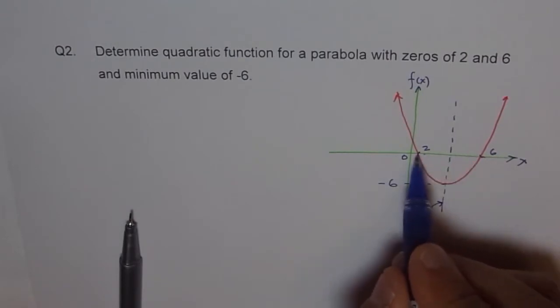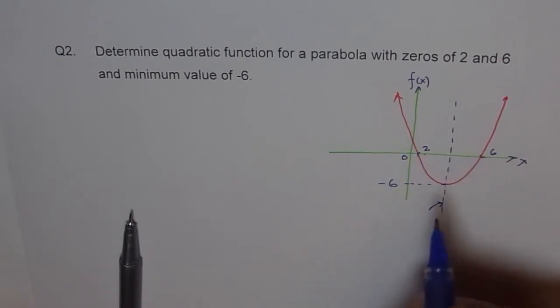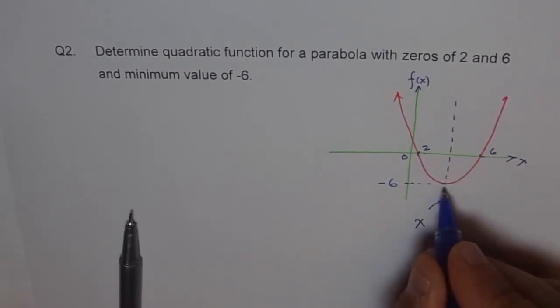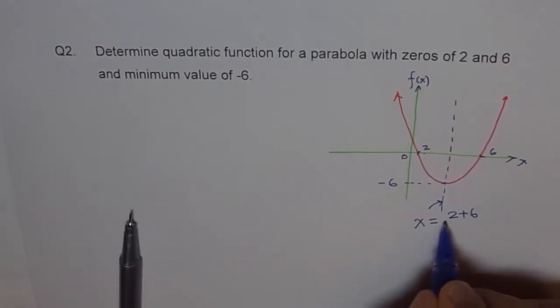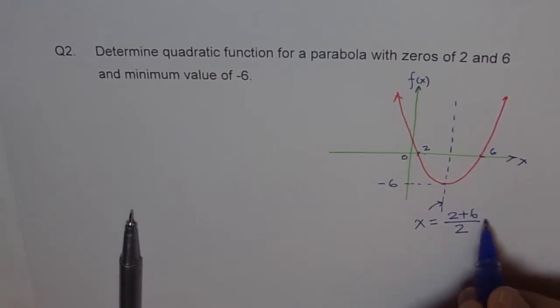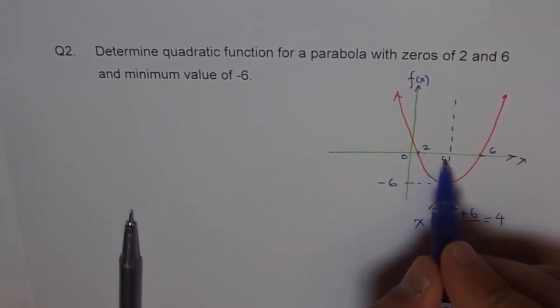It has to be mean value between the two x-intercepts. So we say, the x value for this axis of symmetry is 2 plus 6 divided by 2, which gives us a value of 8 divided by 2 is 4. So this is expected to be at 4.